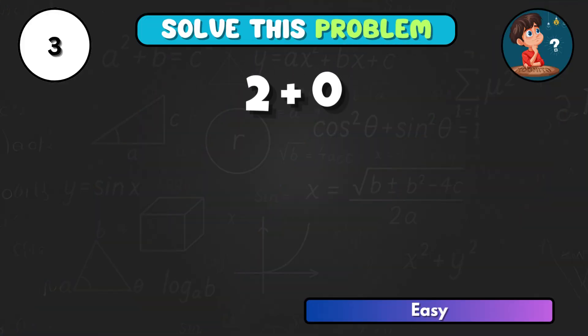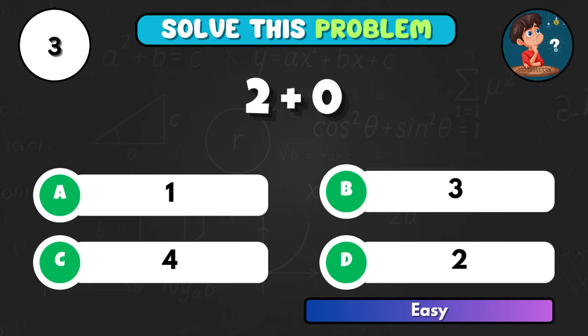If you take 2 and add 0, what's your total? That's D, giving 2.